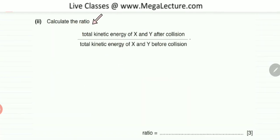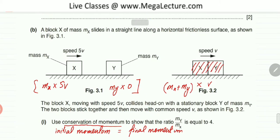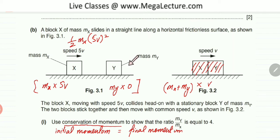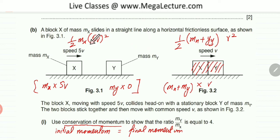The next part asks for the ratio of the total kinetic energy of X and Y after collision to the total kinetic energy before collision. The kinetic energy formula is ½mv². Before collision: KE = ½ MX (5V)². The KE of MY is 0 since it is stationary. After collision: KE = ½(MX + MY)V².